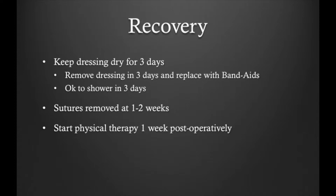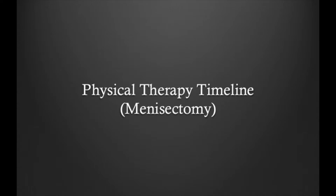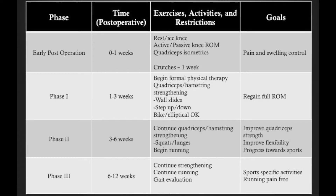This is my standard physical therapy protocol for a partial meniscectomy. The first week, the emphasis is on pain and swelling control. At one to three weeks, patients attempt to regain their full range of motion. Once the wounds are sufficiently healed, patients can start using the bike, stationary bike, elliptical, as well as swim. At approximately six weeks, patients can begin jogging and resume high-impact activity. Full recovery takes approximately six to twelve weeks.